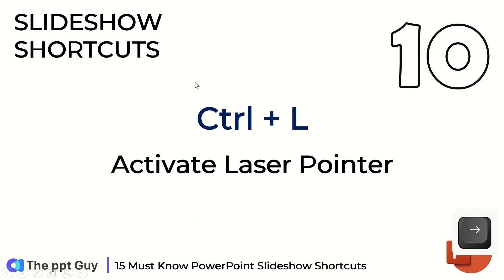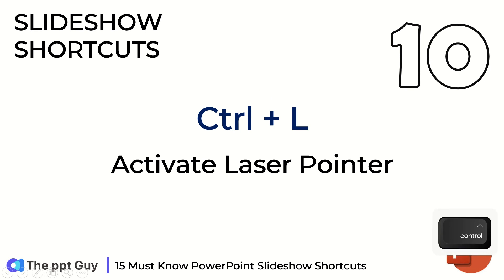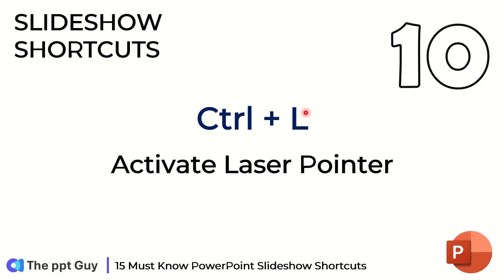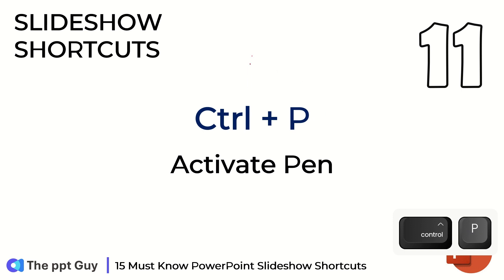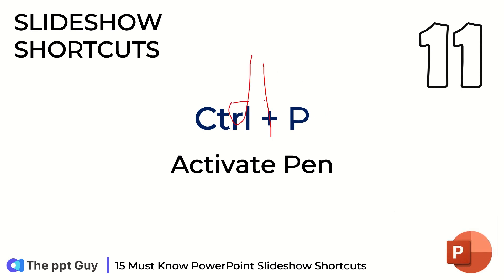If you see the slideshow now, the mouse pointer is displayed as an arrow. We can change it to a laser, which is our shortcut number 10 — click on Ctrl L and the arrow becomes a laser. You can change the arrow into a pen as well. Press Ctrl P, which will change the mouse pointer to a pen. This is our shortcut number 11, which can help you write on the slideshow.